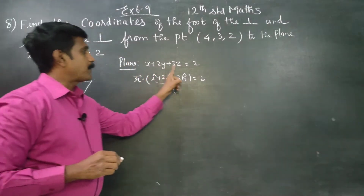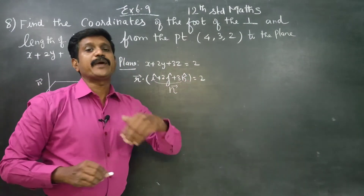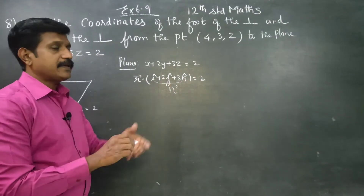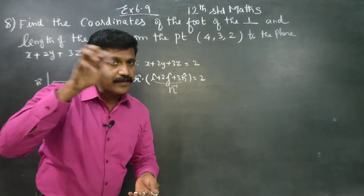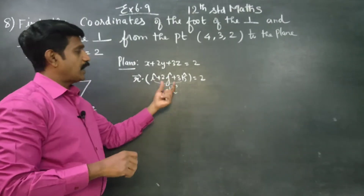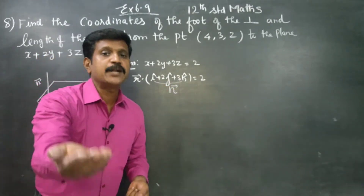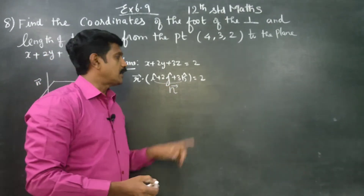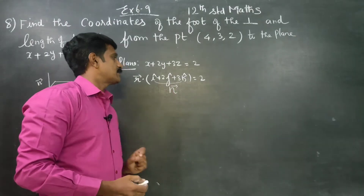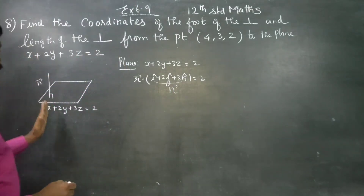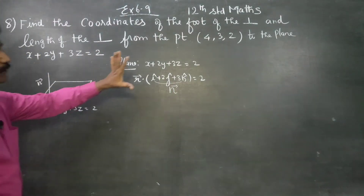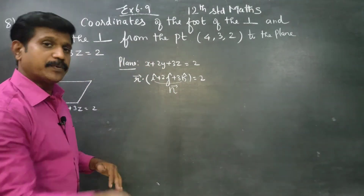Once a plane equation is given, you can find the perpendicular direction — that is the n-vector. This is perpendicular to the plane. We will now proceed to solve the question.